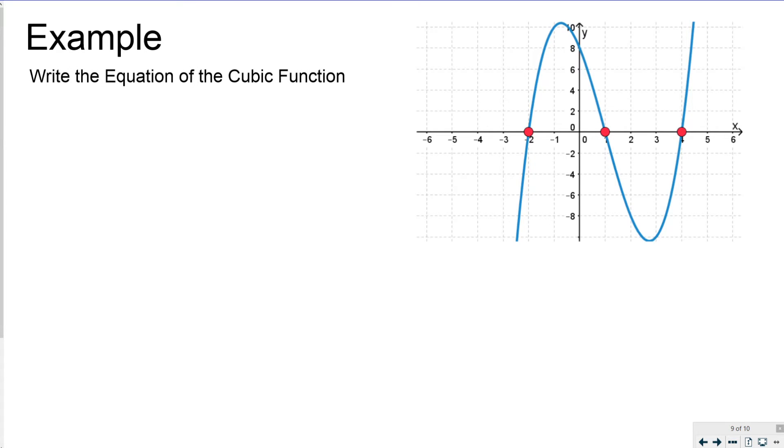Write the equation of the cubic function. I took the cubic function from the previous two slides that we were referring to when I showed you the roots, the intercepts, the point of inflection, all that stuff. I'm going to actually show you how to write that cubic function's equation. So the first thing that I'm going to do is locate the zeros here, here, and here. So the three zeros are negative two, one, and four.